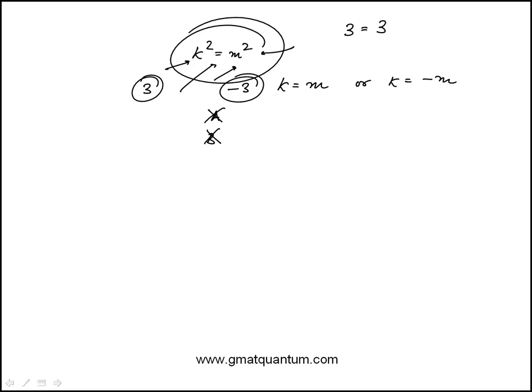So the absolute value of these two variables are equal, which means absolute value of k is equal to absolute value of m. That's sort of the conclusion of that.